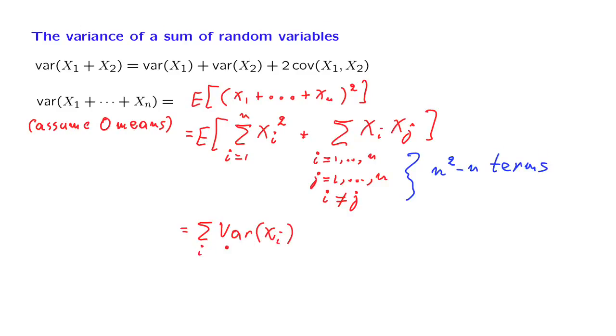since we assumed zero means. And similarly here, we're going to get this double sum over i's that are different from j, of the expected value of xi, xj. And in the case of zero means again, this is the same as the covariance of xi with xj.